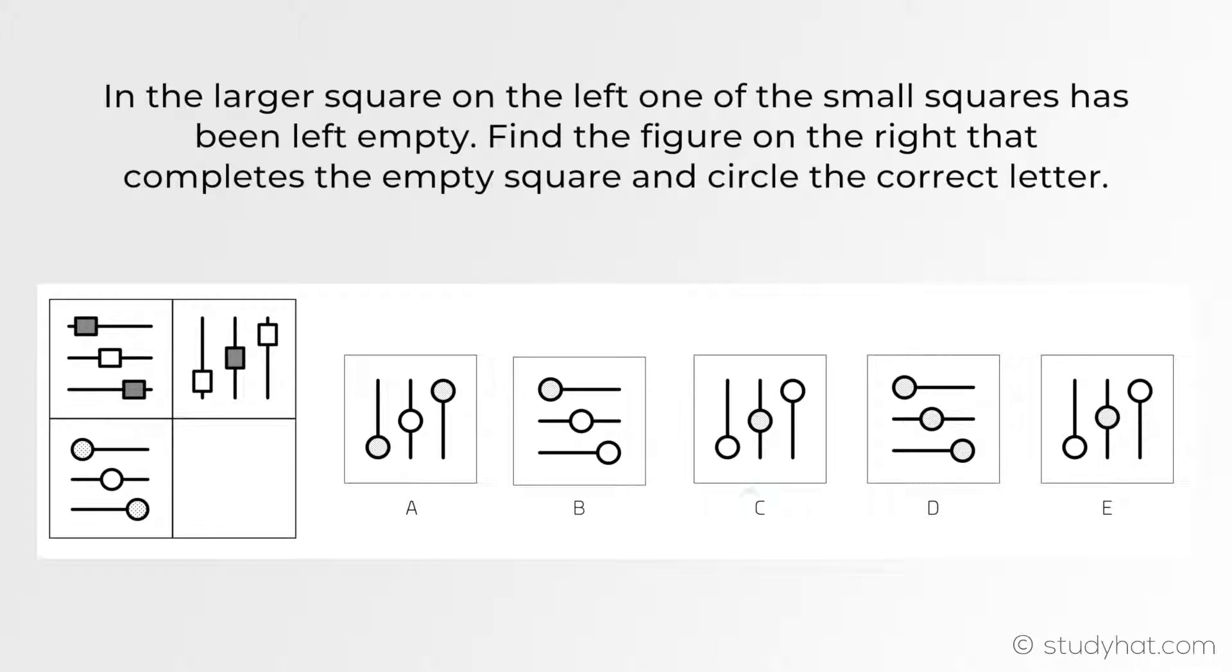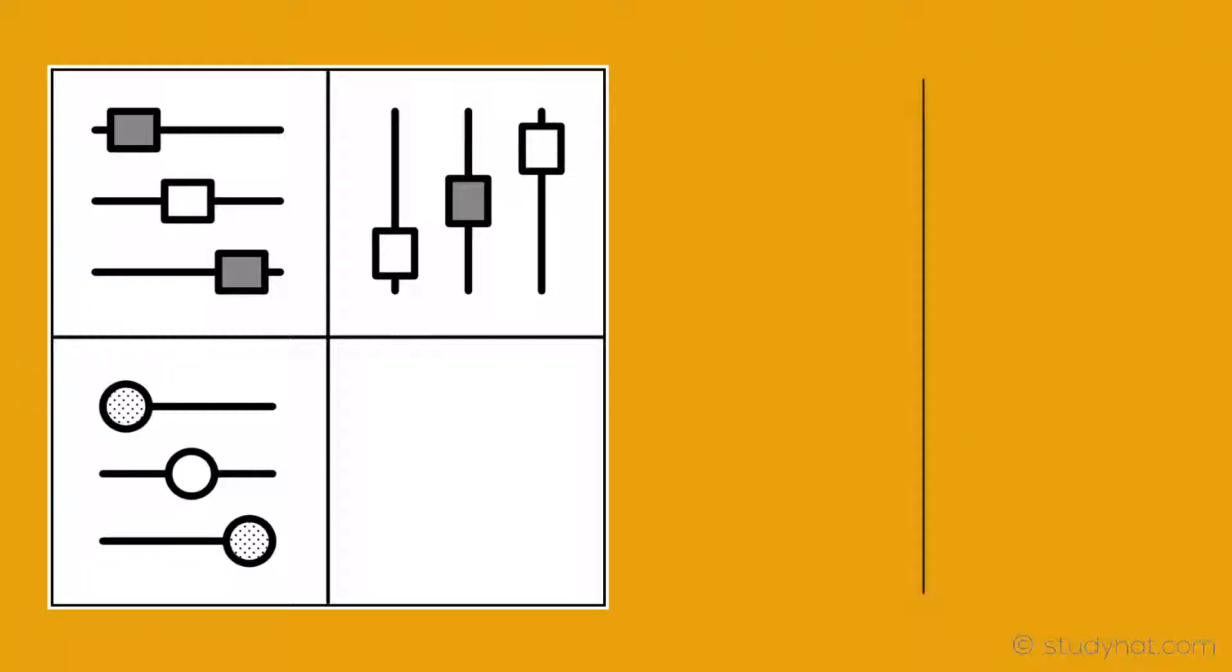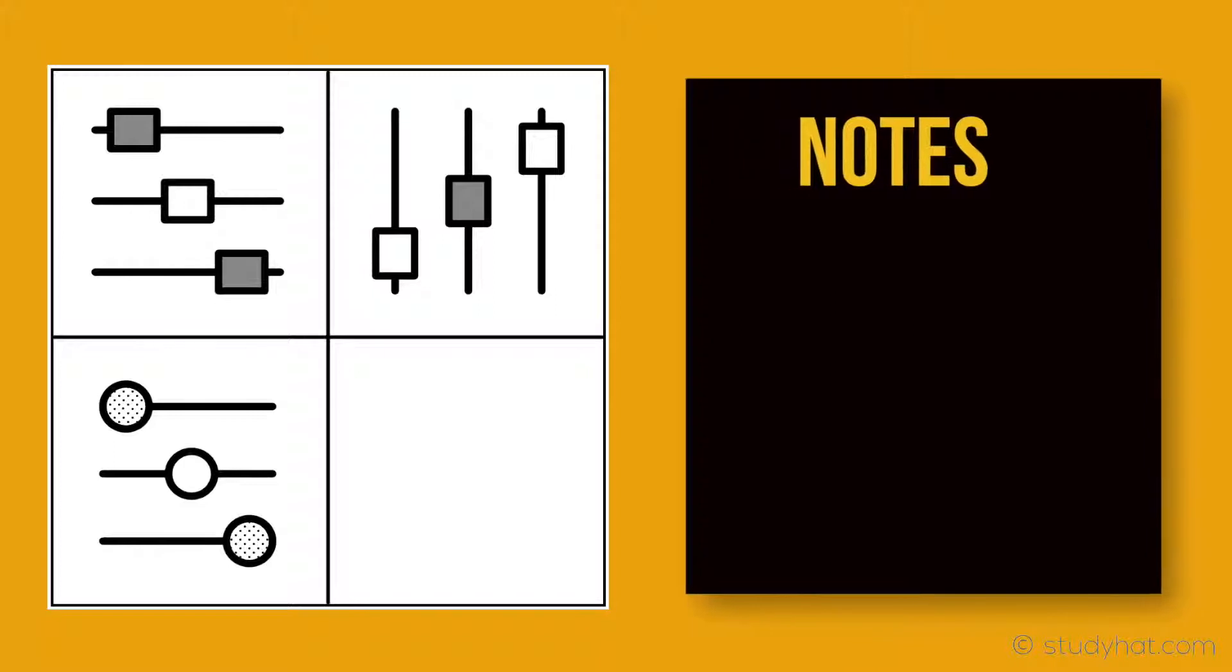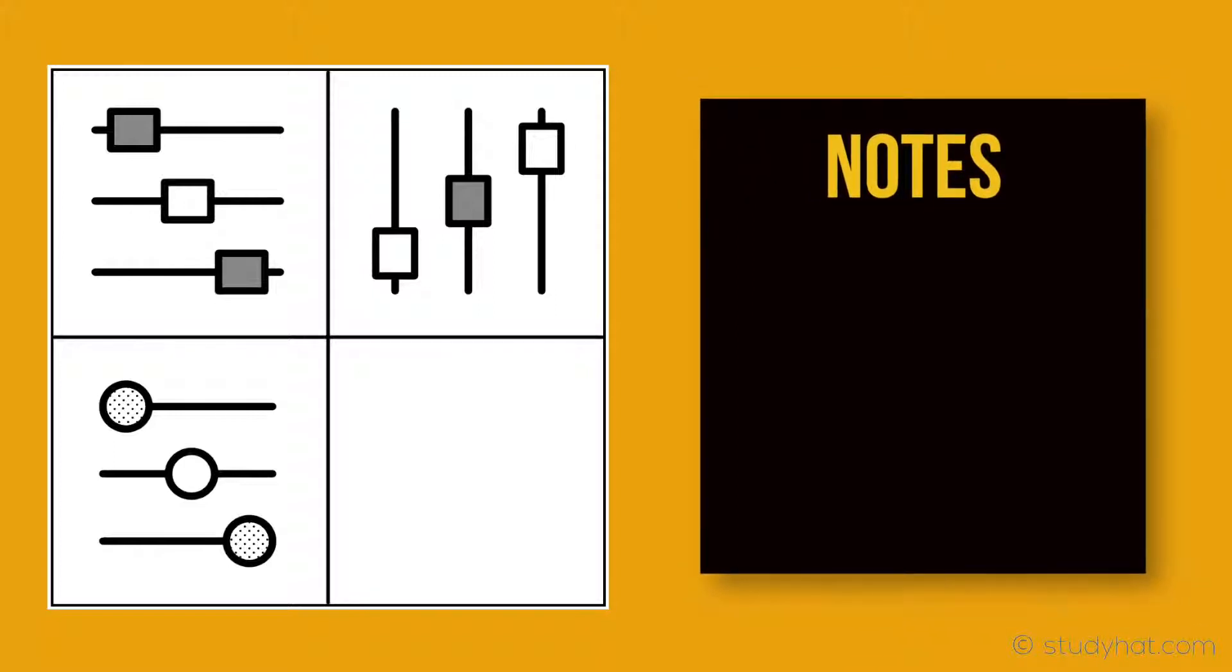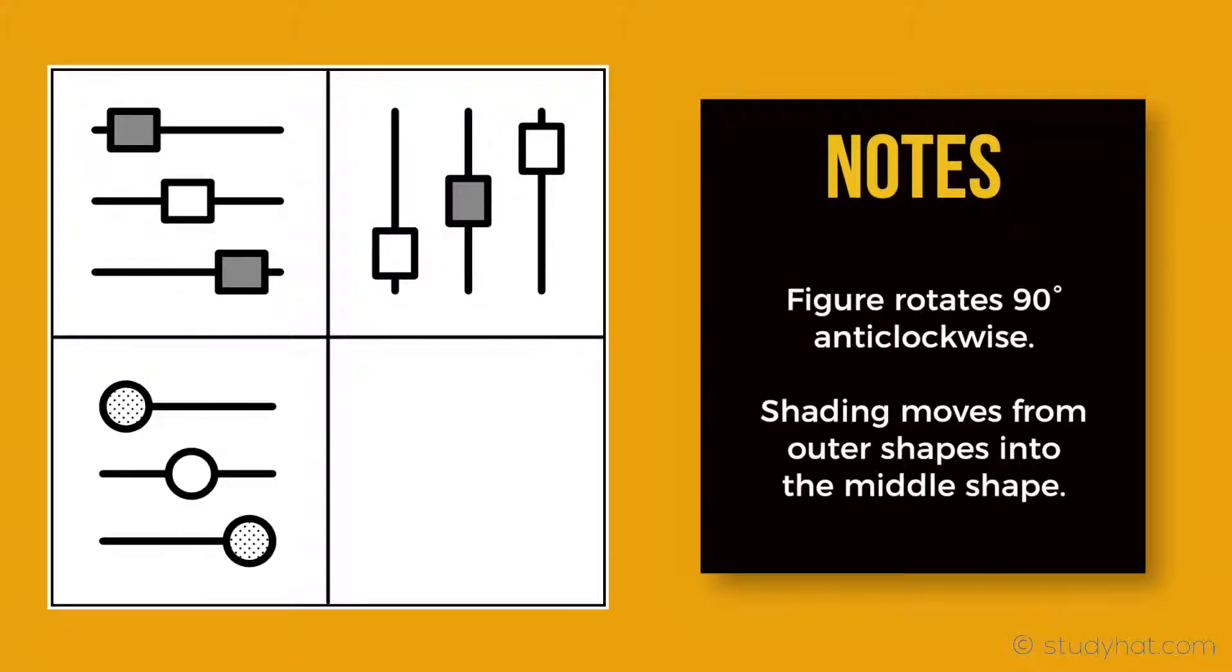Okay, so the answer is C. This was a tricky one since you had to watch out for not only the rotation part, but also shading. If you take a look at the top two figures, the pattern is that the figure rotated 90 degrees anti-clockwise and the shading moves from these two outer squares and into the middle. If you then apply that to the bottom figure, you'll find that the answer is C. So firstly, rotate it 90 degrees anti-clockwise and then make sure only the middle shape is shaded in.